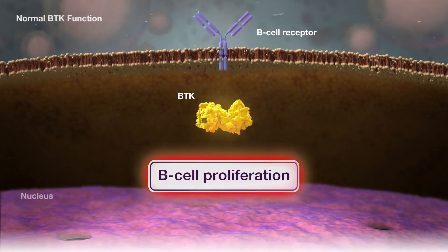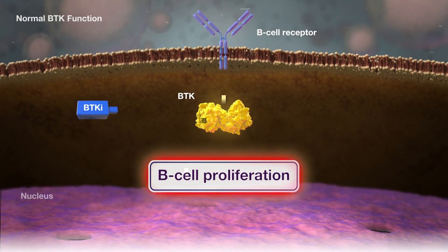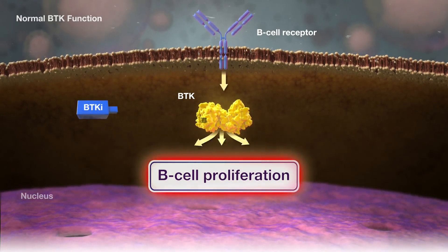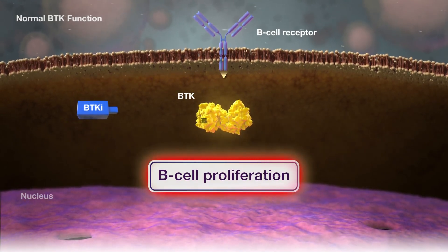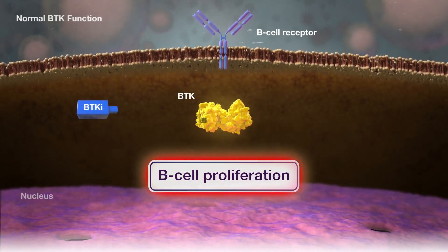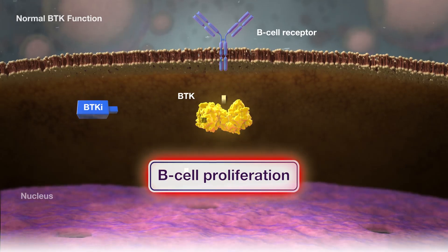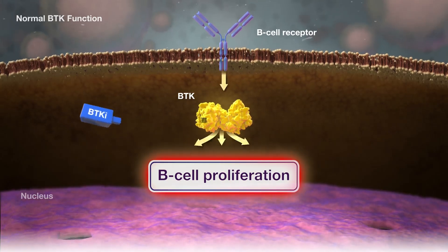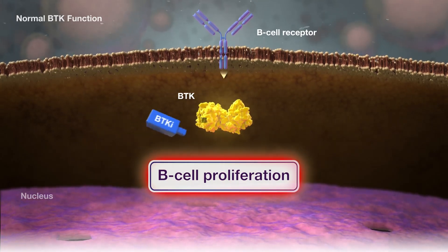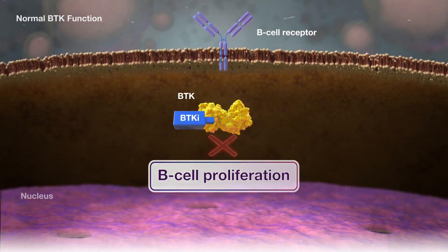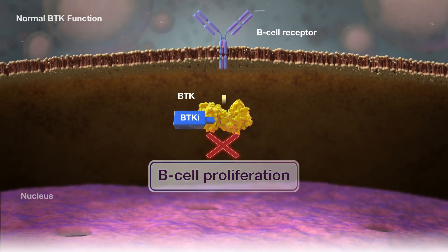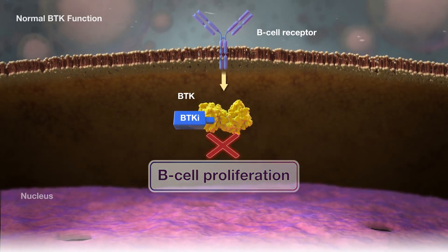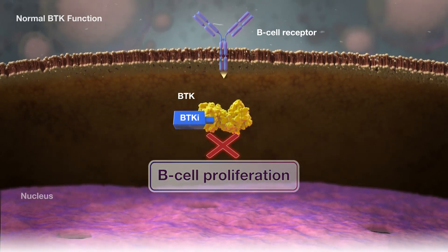Bruton's tyrosine kinase inhibitors, BTKIs, are a type of treatment for certain B-cell malignancies that bind to the BTK protein to block BTK activity. This inhibits B-cell receptor signaling, ultimately resulting in reduced B-cell proliferation.